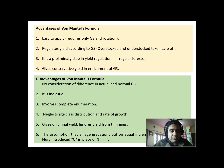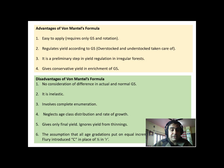Now the disadvantages of von Mantel's formula. First, there is a distinction between actual and normal growing stock. The formula does not pay attention to whether the actual growing stock is above normal (overstocked) or below normal (sub-normal). Second, it is inelastic — whatever the formula gives, that much yield must be removed from the forest, regardless of the condition of the forest at a particular place, site, or compartment.